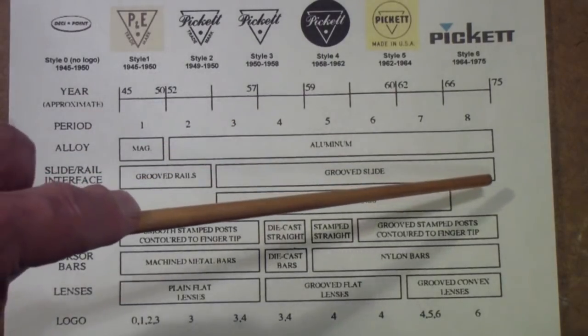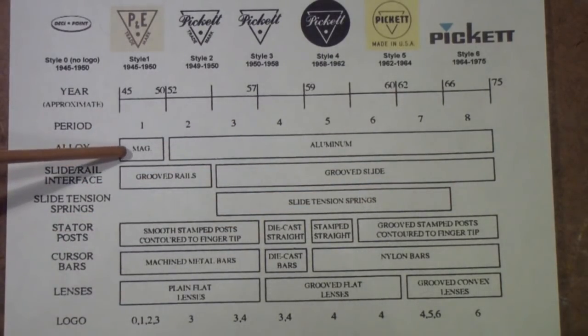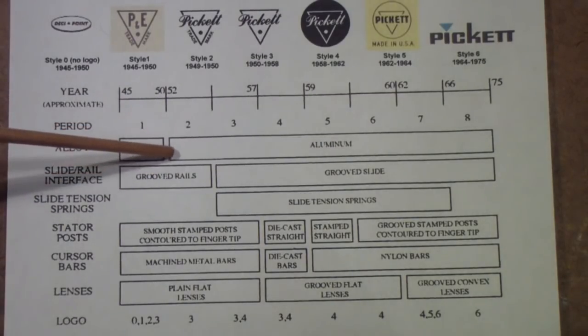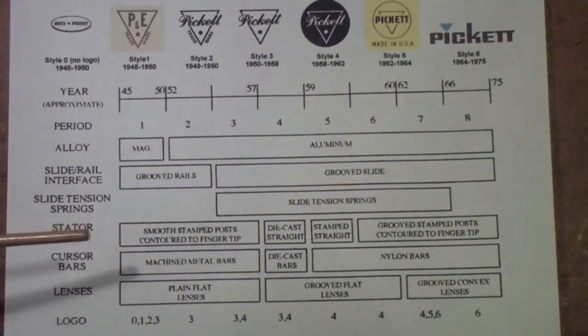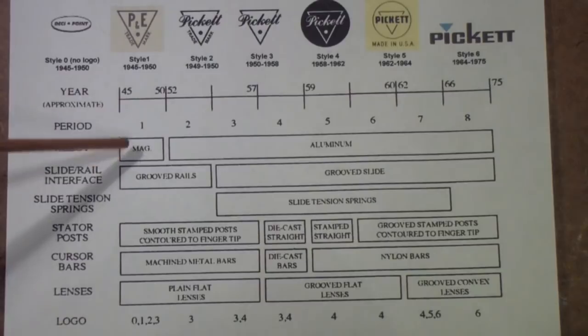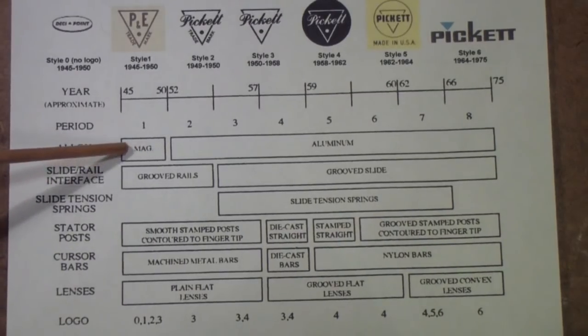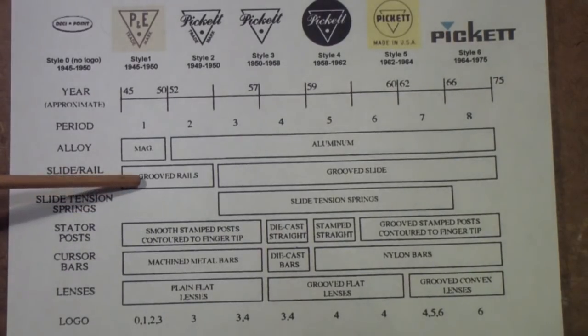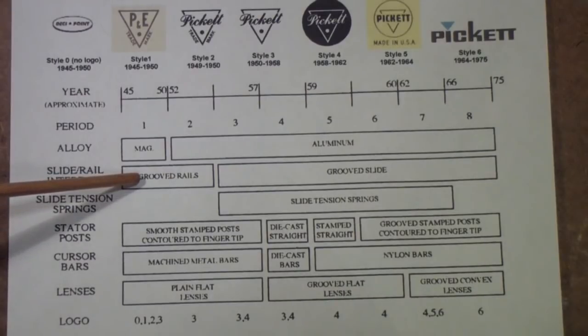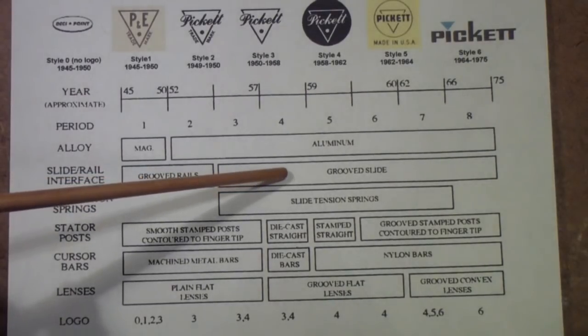The alloy is the metal, the base metal that they built the rule out of. On the left is magnesium and aluminum is the next. You see that from about 1950 on, they only built aluminum slide rules. They stopped using magnesium. For one reason, it corrodes very badly. Early on, they used to groove the rails. And later, they grooved the slide.